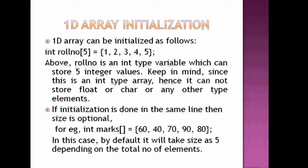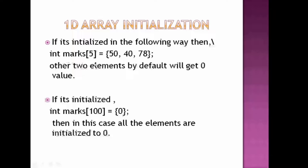If you initialize int marks[5] = {50, 40, 78} — only three elements — then the remaining two elements will be initialized to zero by default. Many times we require a zero array where all elements are initialized to zero. A simple trick: write int marks[100] = {0}, and all 100 elements will be initialized to zero.